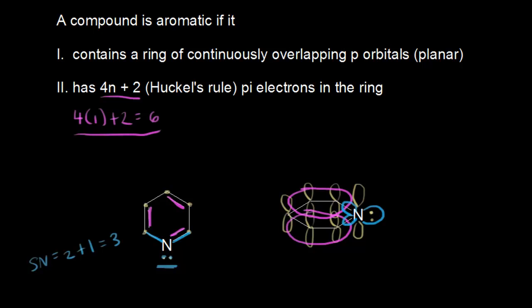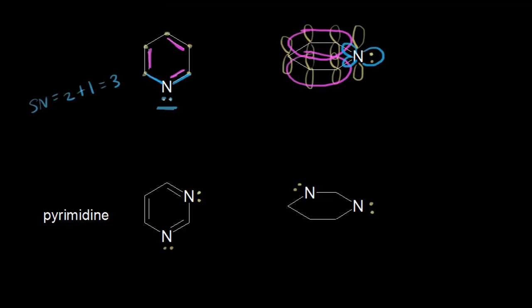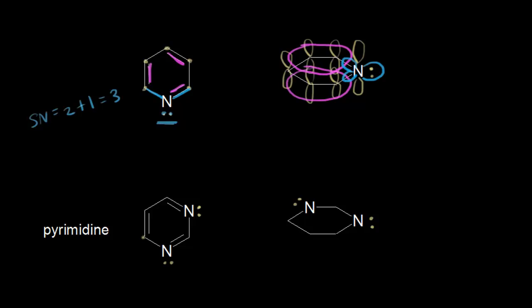We've seen that pyridine is aromatic. Let's do a similar example: pyrimidine. Analyzing pyrimidine the same way, the four carbons are each connected to a double bond, so each carbon is sp2 hybridized with a free p orbital. For the nitrogens in pyrimidine, it's the exact same situation as in pyridine — each nitrogen has two sigma bonds and one lone pair of electrons, giving a steric number of 3, so each nitrogen is sp2 hybridized and has a free p orbital.